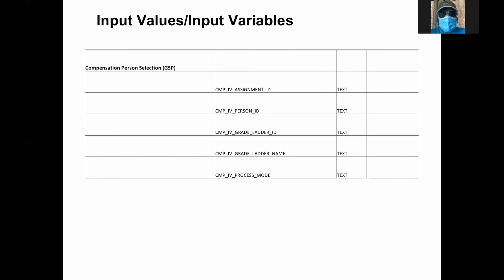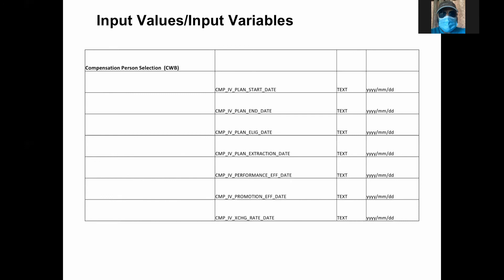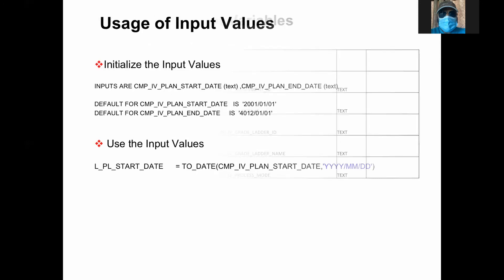If you look at the GSP, it is passing assignment ID, person ID, ladder ID, ladder name, and more. This is how you pass it. So basically, the same fast formula if you look at it, they pass different values because the product thinks that is what extra information you need. So if you look at the TCS, that is the data statement. Now when you are coming to variables, this is how the inputs are. If it is a number, you don't want to give anything. If it is text or date, most of the time it's text.